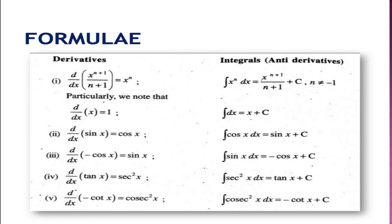The derivative of sin x is cos x, so the integration of cos x is sin x. The derivative of cos x is minus sin x, so the integration of sin x is minus cos x. For tan x: the derivative of tan x is sec² x, so the integration of sec² x is tan x. The derivative of minus cot x is cosec² x, so the integration of cosec² x is minus cot x plus C.